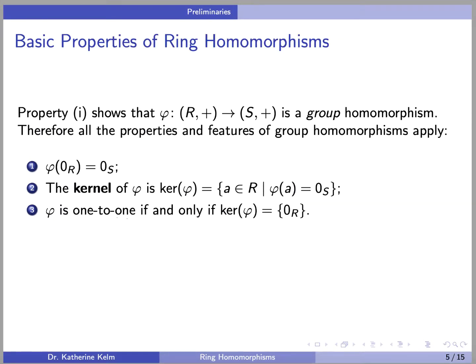Property 1 shows that phi is actually a group homomorphism on the underlying abelian groups. Therefore, all the properties and features of group homomorphisms apply. For example, phi of the 0 element from R equals the 0 element from S. We can define the kernel of phi just as we did for groups — namely, the kernel of phi is the set of all elements in R that get sent to the additive identity element in S.